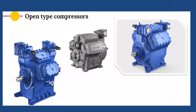In open-type compressors, only the compressor body is present; an external prime mover — motor or IC engine — is connected to the shaft to provide energy input. The compressor and motor are separate units, not a single entity. In semi-hermetic compressors, the motor and compressor are assembled into one single unit. When purchasing, it comes as a single unit.